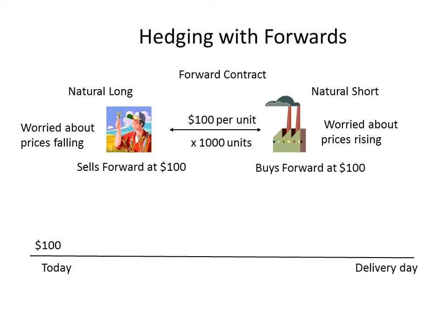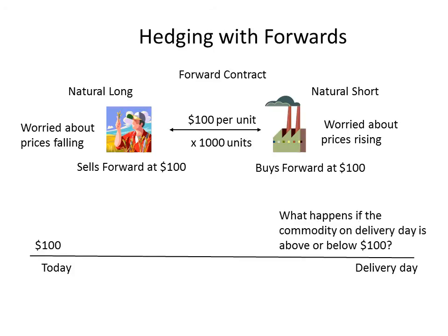During the hedging period, the farmer and the manufacturer have been able to lock in price certainty. We have to consider what happens if on delivery day in the local market prices happen to be above or below $100. Let's suppose that on delivery day in the local market prices are trading at $150.